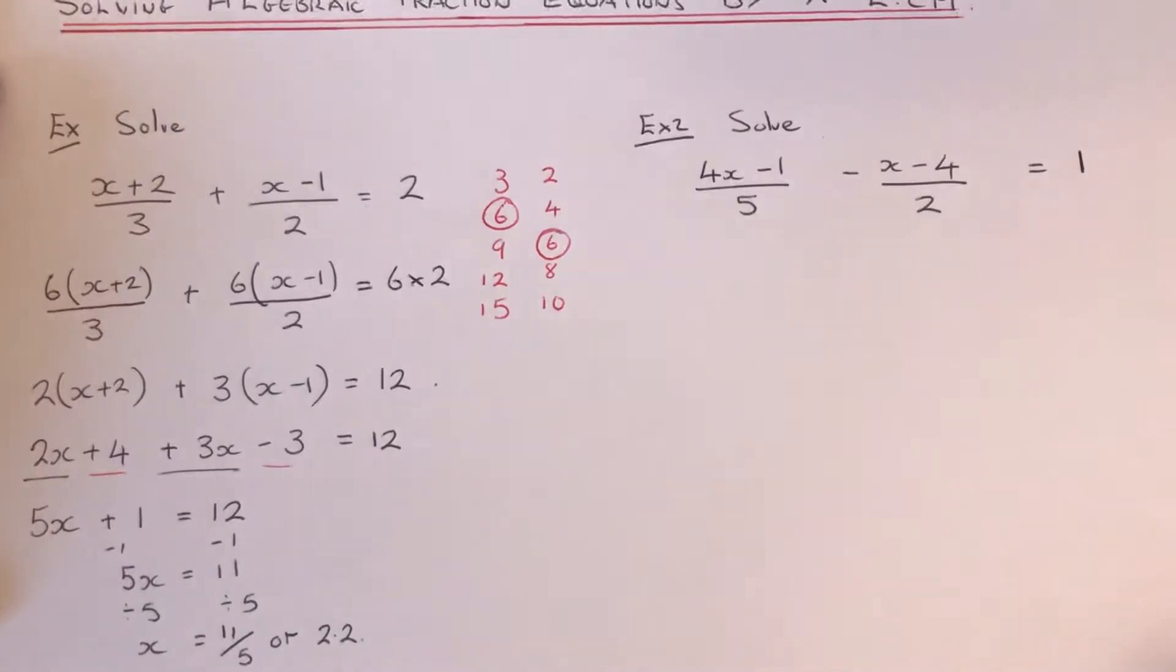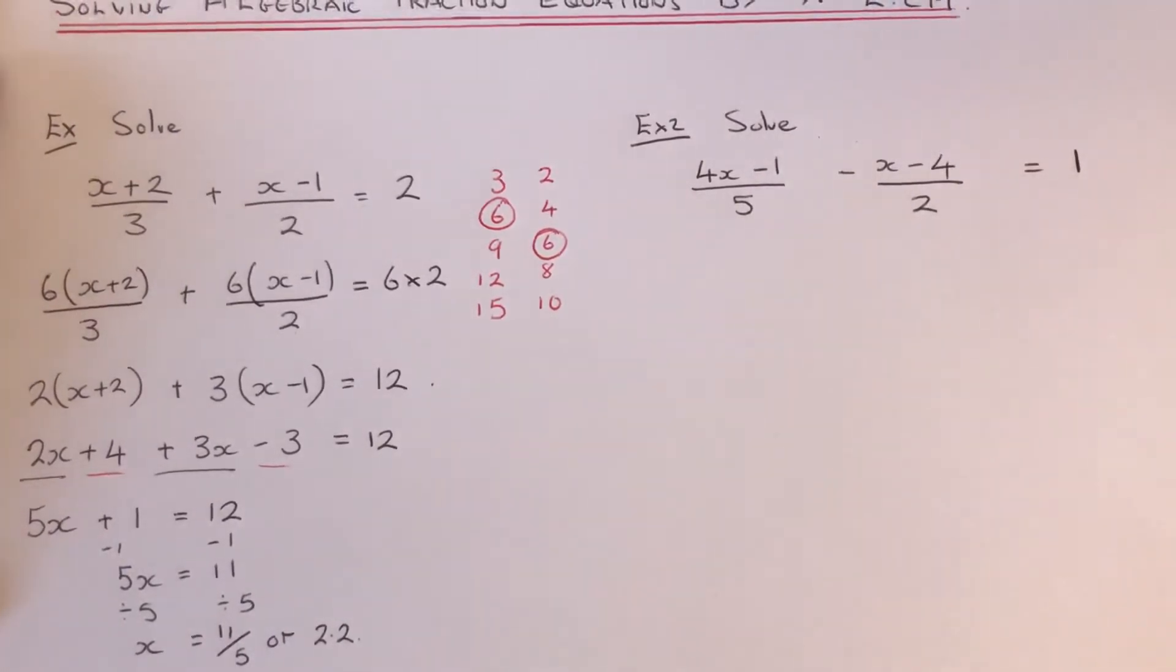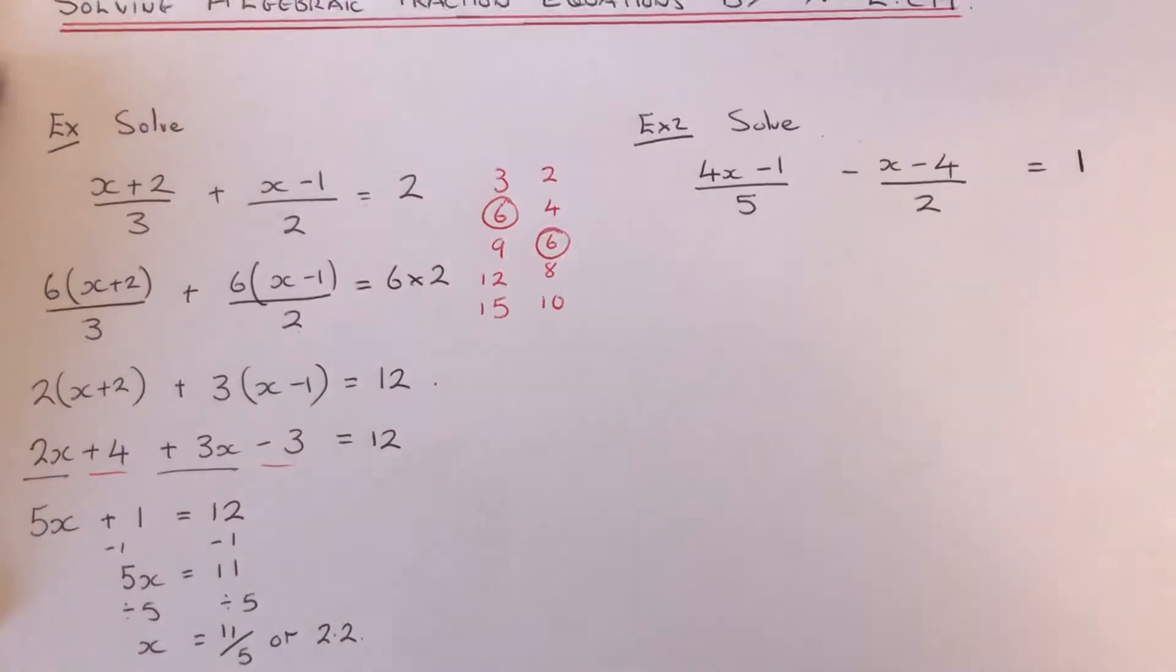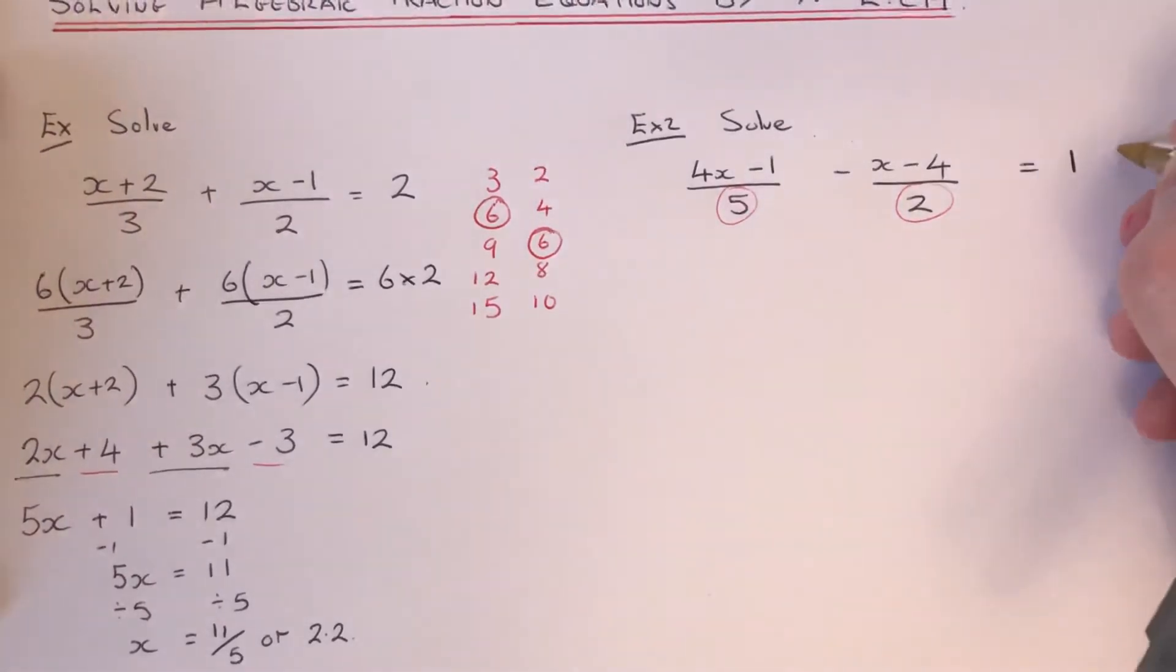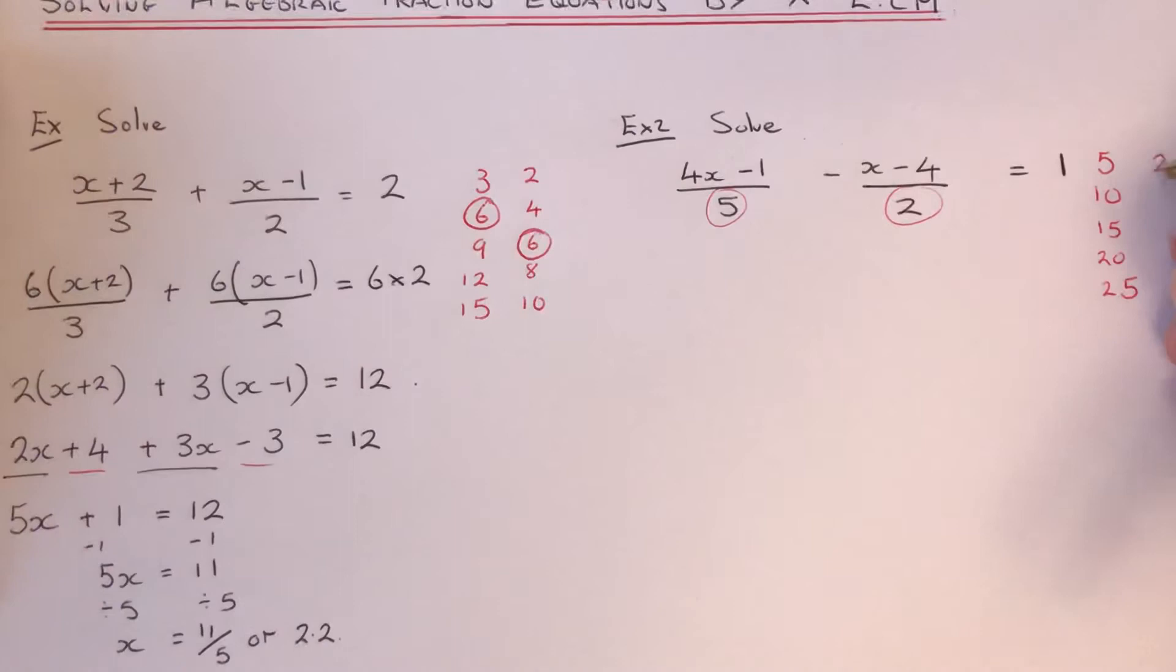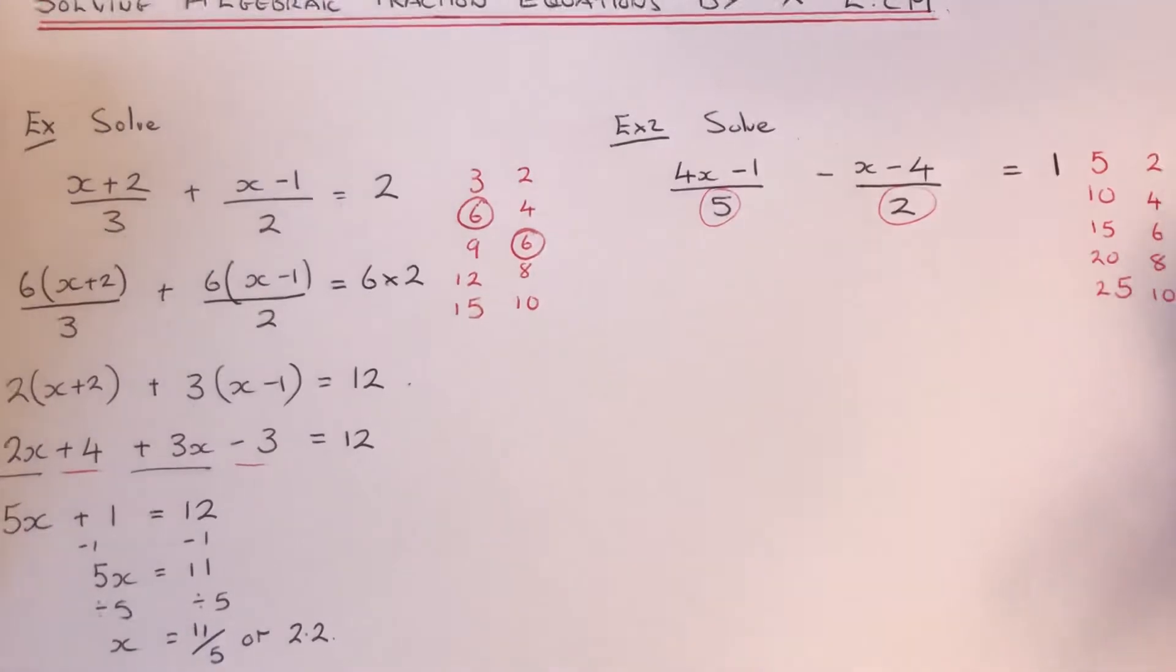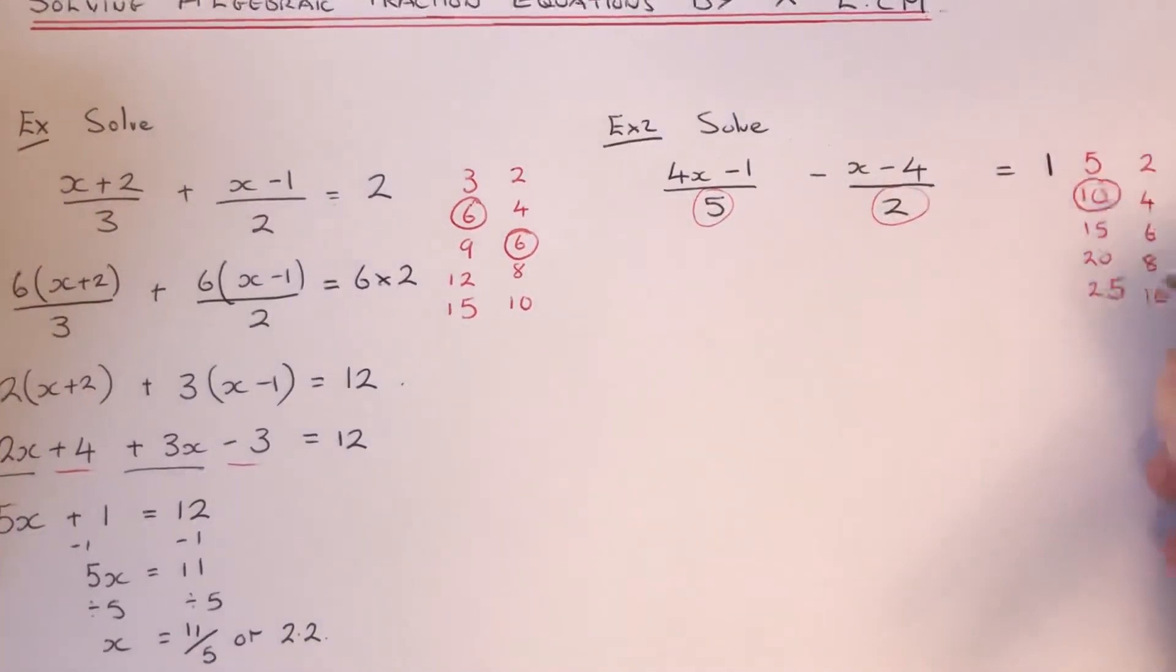Let's have a look at our second example. This time we've got 4x minus 1 over 5 minus x minus 4 over 2 equals 1. We've got to be careful with this negative here as well. Again, if we find our lowest common multiple of our denominators, if you don't know what this is, just jot some multiples down on the side of your page. Our multiples of 5 are 5, 10, 15, 20, 25. And our multiples of 2 are 2, 4, 6, 8 and 10. You can see our lowest common multiple is 10 this time.